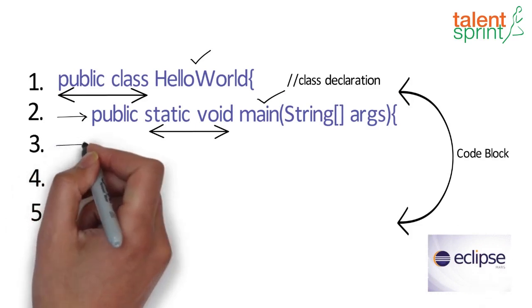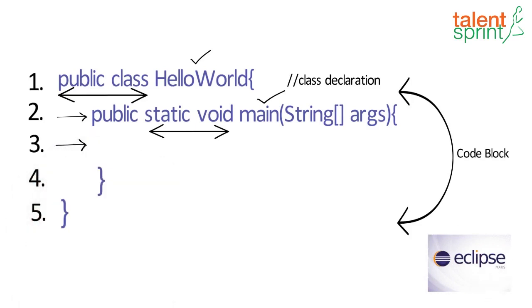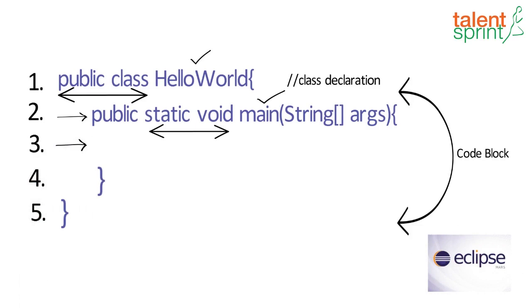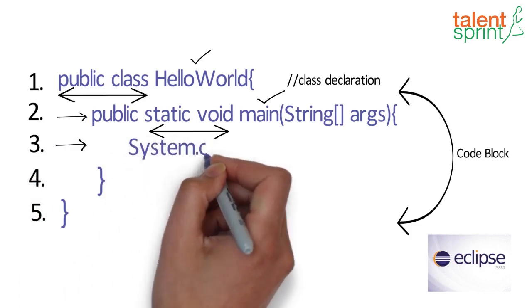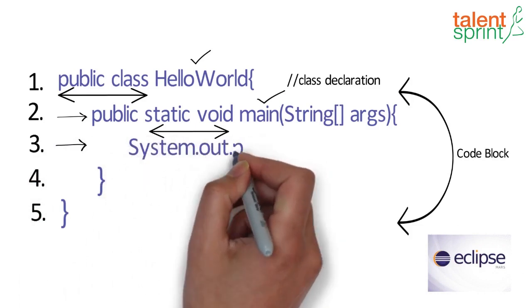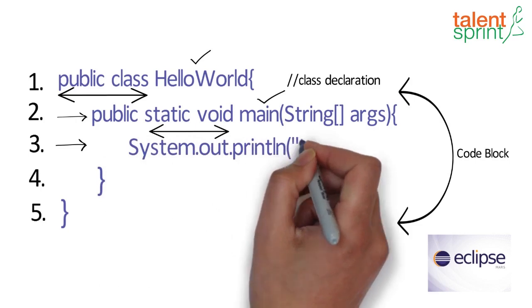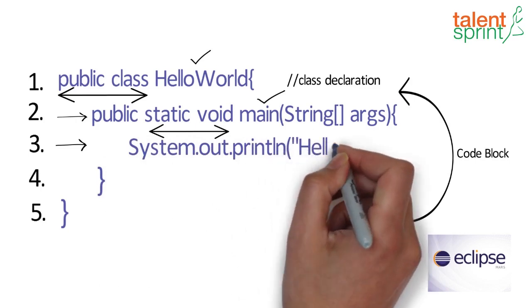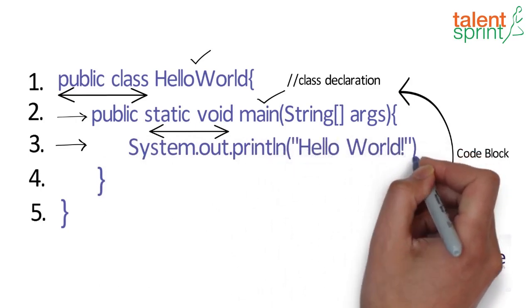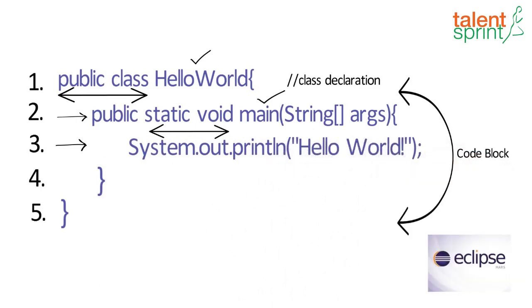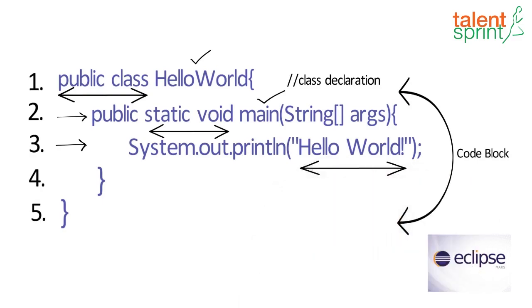And finally, the most important line that will actually print hello world on screen: 'System.out.println' and 'hello world' in quotes. So whatever you want to print on the screen goes in the quotes inside the parentheses.